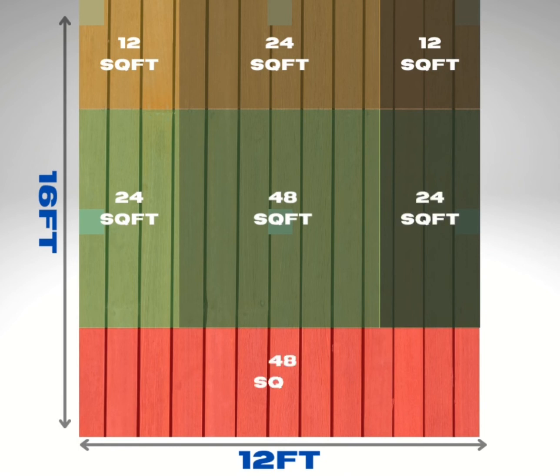The bottom section is going to be 12 times four, which is 48 square feet. And now you've calculated all the tributary areas for the deck, which will be handy for sizing the footings and the posts.